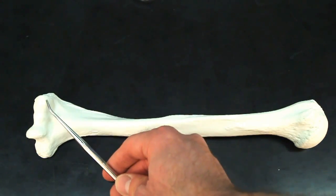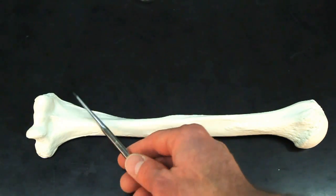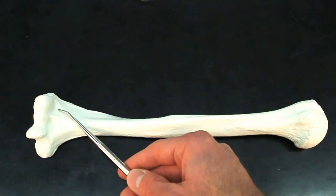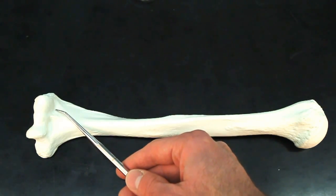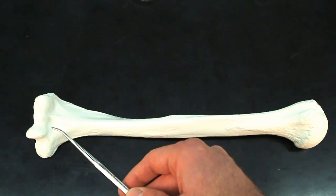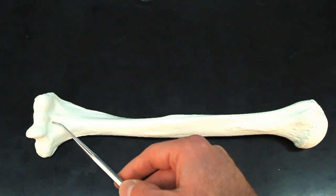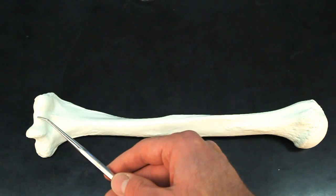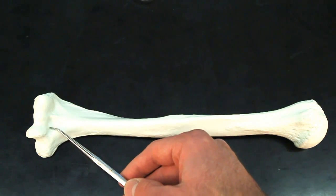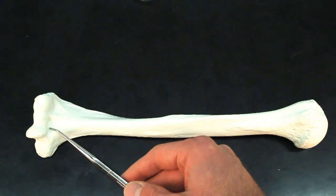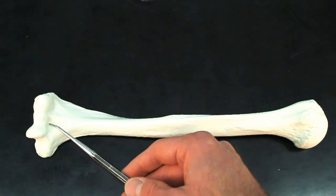If you go just above the capitulum, there's a small little indent here, so a little indent that's just proximal to the capitulum. That is going to be your radial fossa. The slight indent right here, which is just proximal to the trochlea, that is the coronoid fossa.